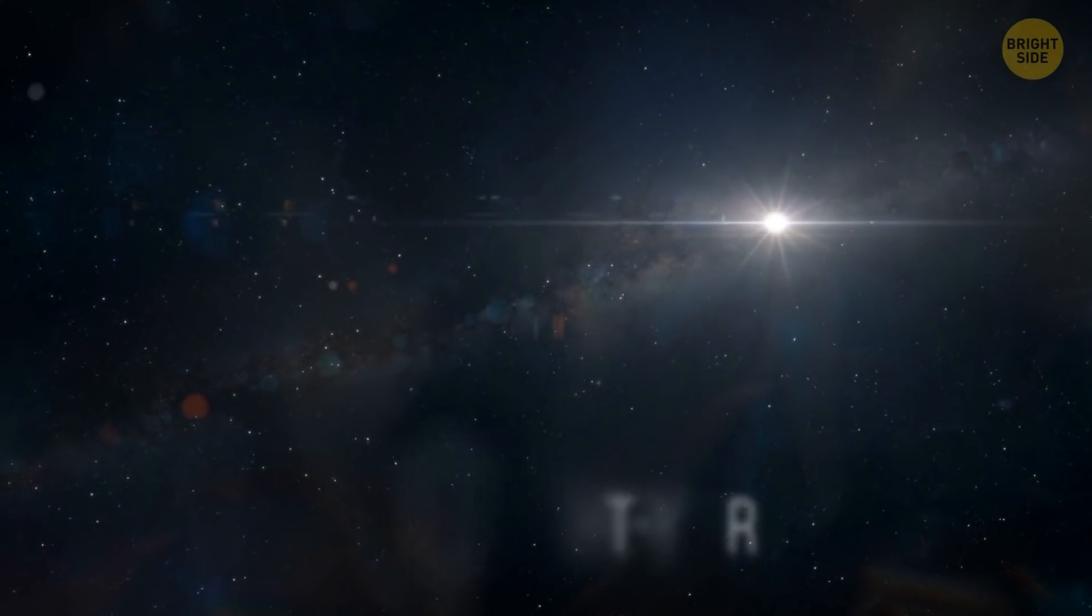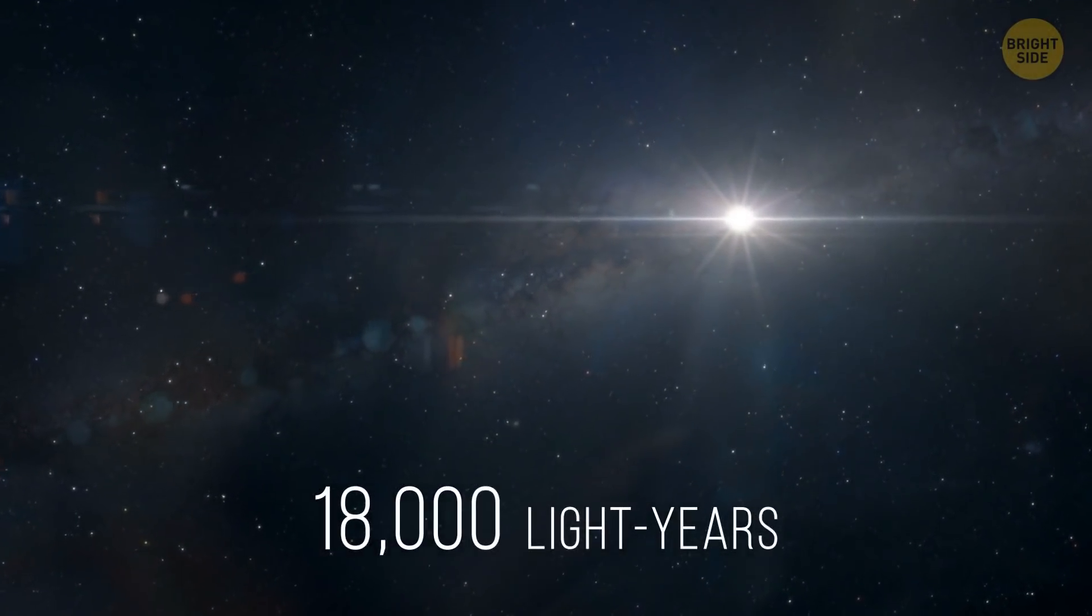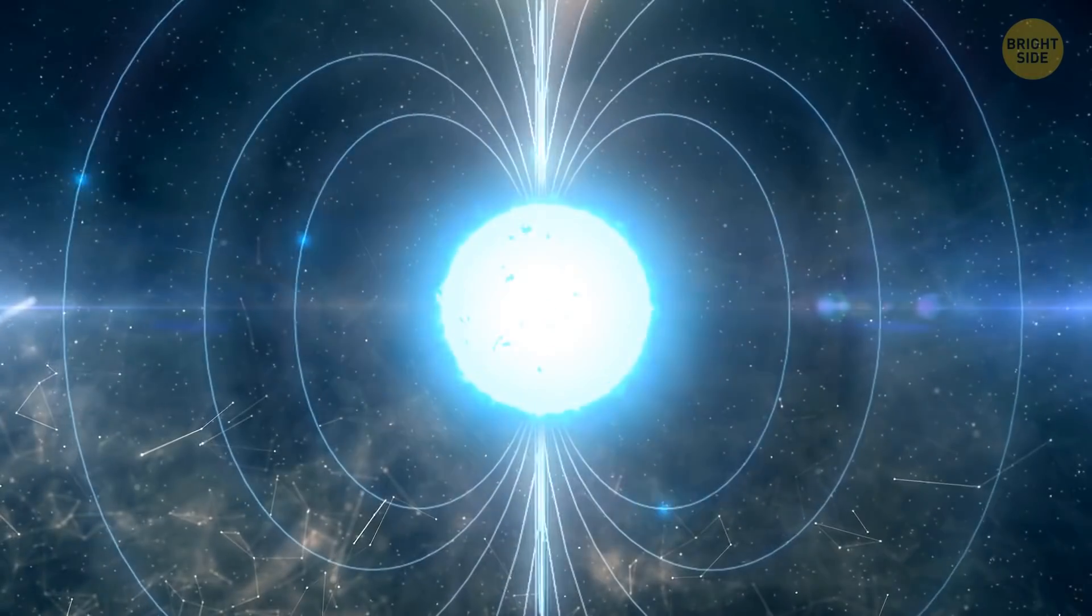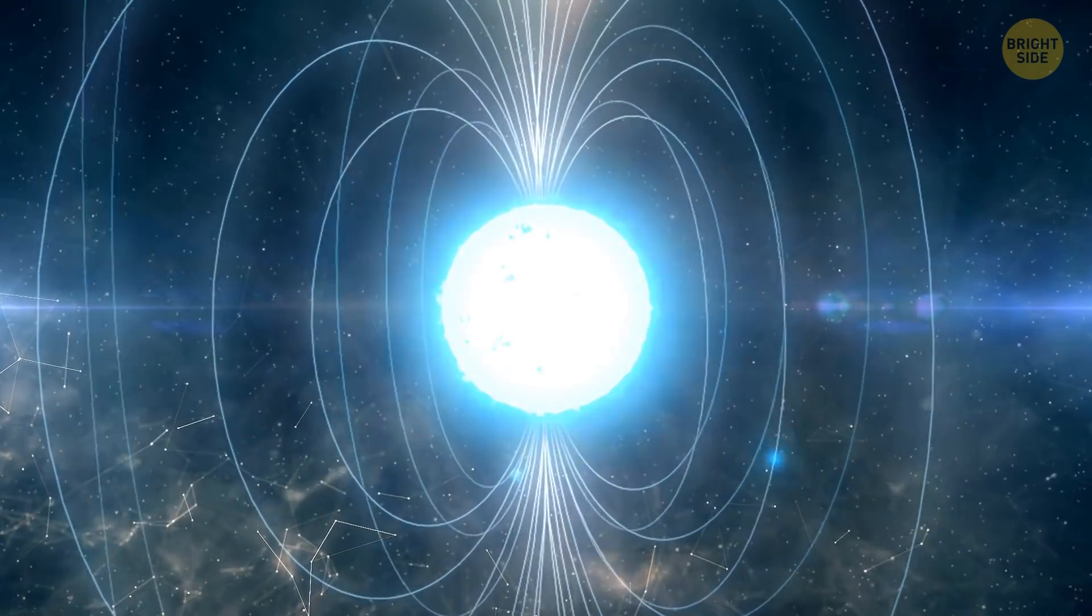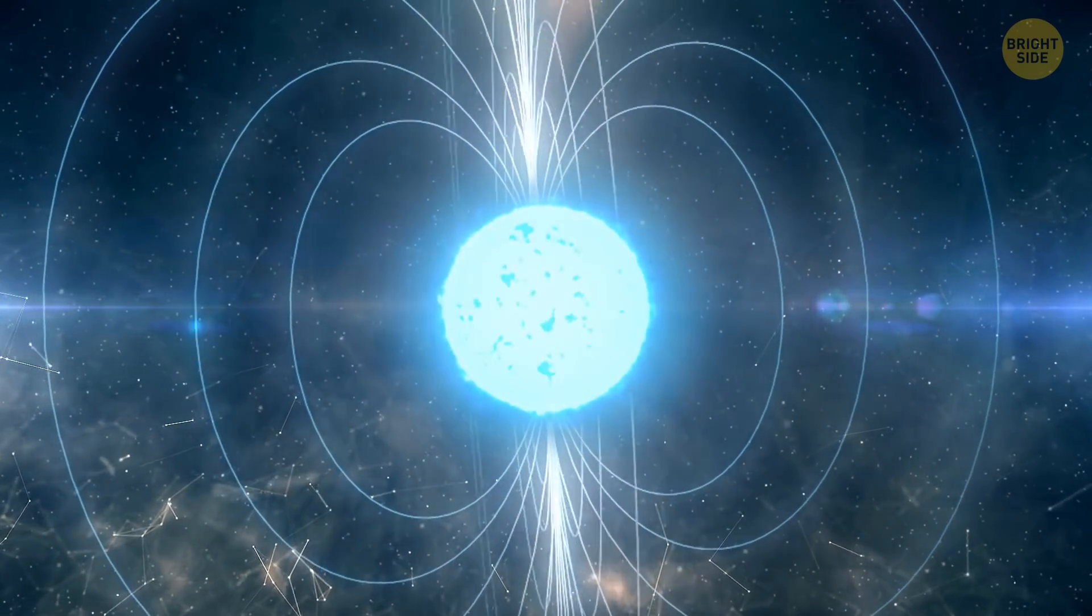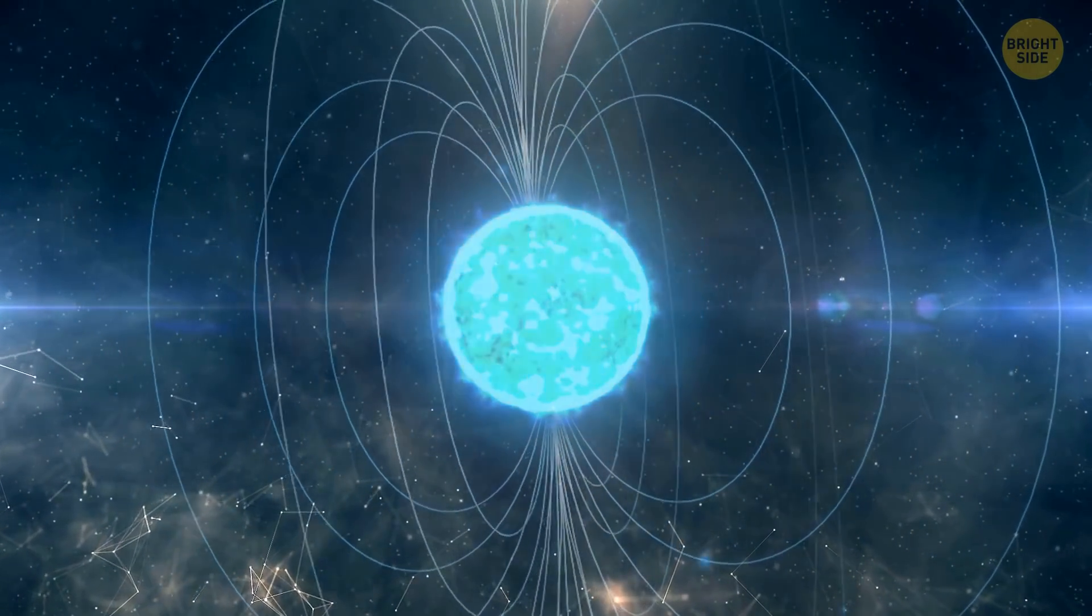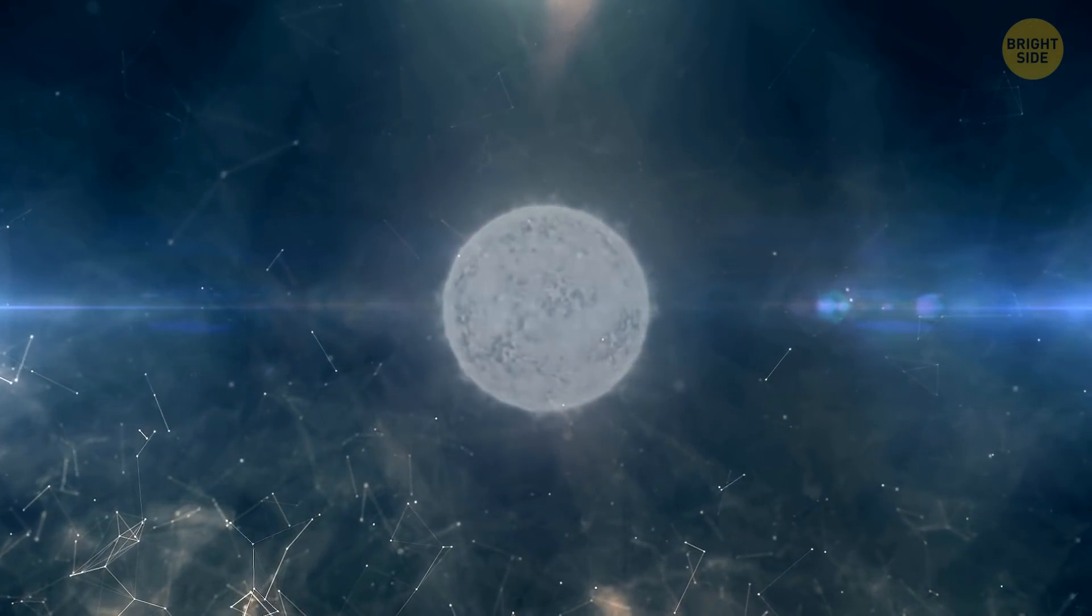Another magnetar is 18,000 light-years away from our planet. It suddenly started to burst in 2002. Around 80 bursts were recorded within a four-hour window. After that, the magnetar has never been active again.